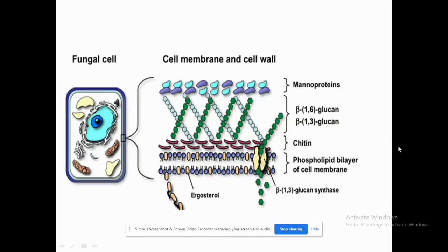The beta-glucans are the site of action of antifungal drugs. In the diagram, the red-colored structures represent chitin and the dark green long-chain structures represent beta-glucans. There are also proteinaceous structures in the fungal cell wall known as mannoproteins, along with a phospholipid bilayer forming the cell membrane.